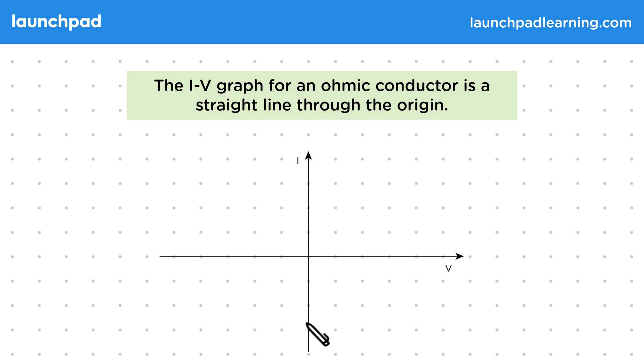For ohmic conductors, this graph will be a straight line. We can also say there is a linear relation between the current and potential difference. Notice that the graph passes through the origin. We can't have a current through the conductor without a potential difference and vice versa. This also means that both values are always both positive or both negative. If we reverse the potential difference, the current must also be reversed.